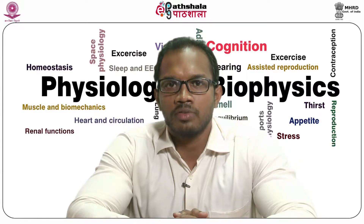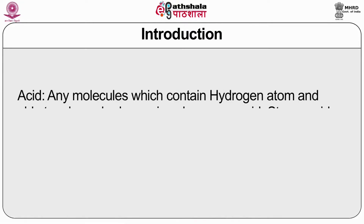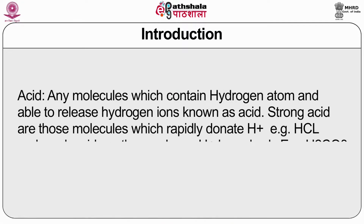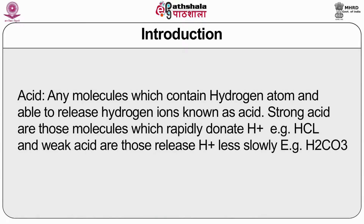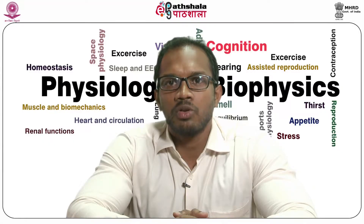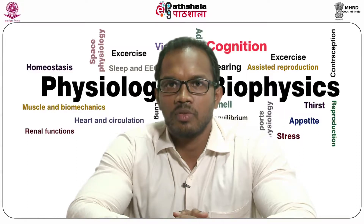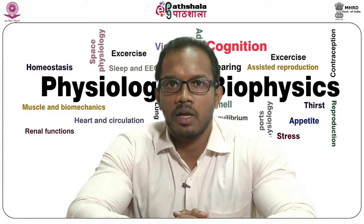What is acid and what is base? An acid is any molecule which contains a hydrogen atom and is able to release a hydrogen ion. Strong acids are those molecules which rapidly donate hydrogen ions, for example HCl. Weak acids release hydrogen ions slowly, for example H2CO3. A base is any molecule that can accept a hydrogen ion, for example HCO3 and HPO4.